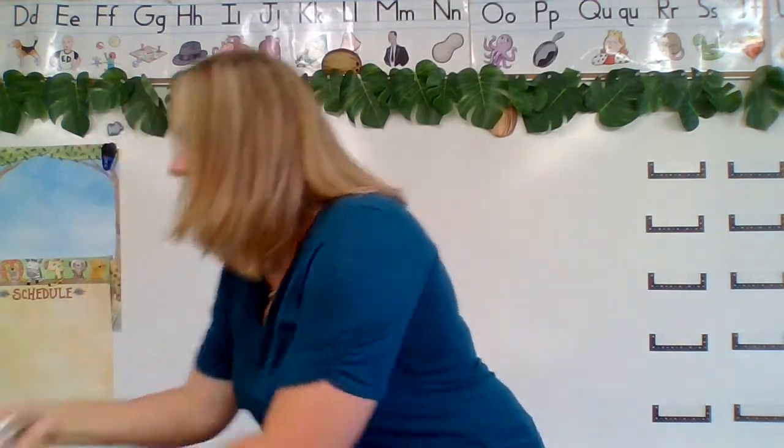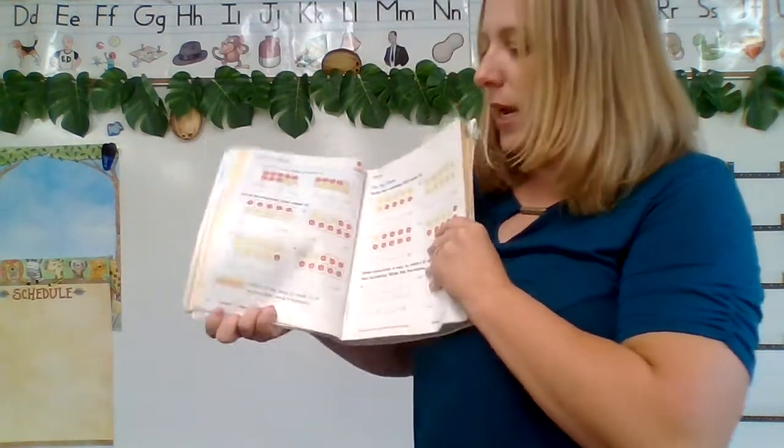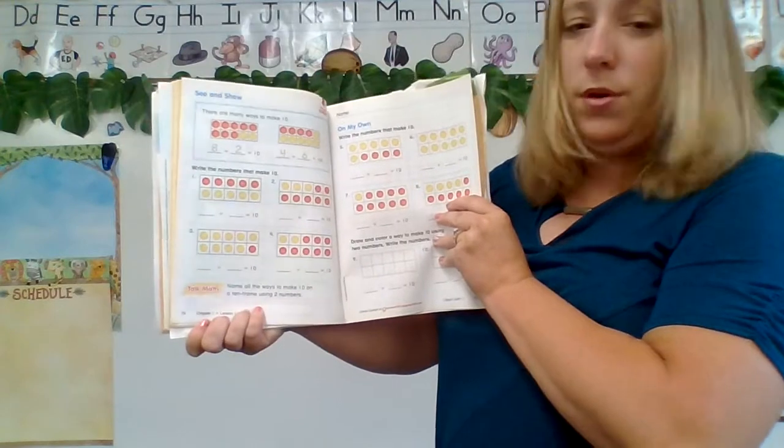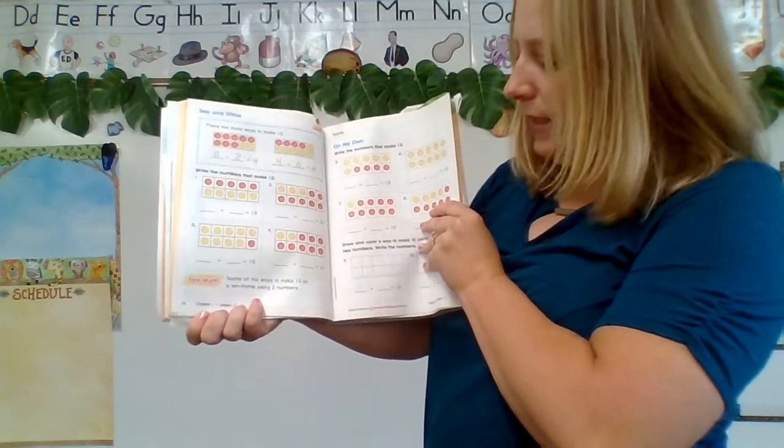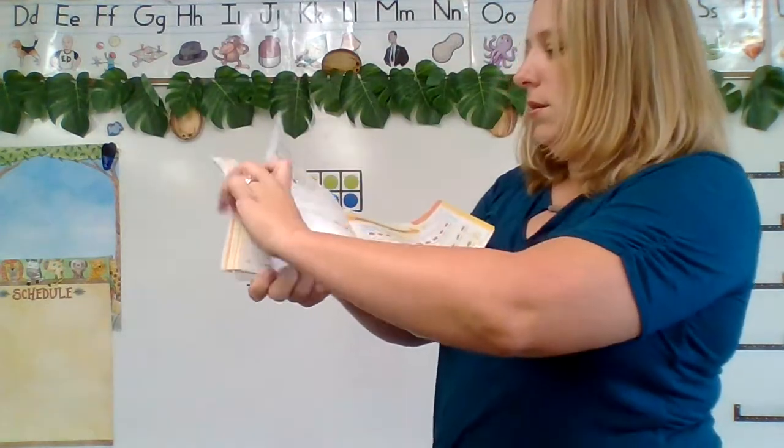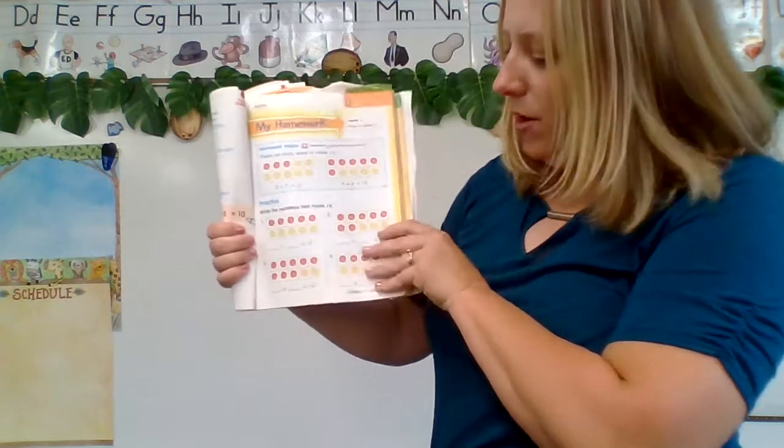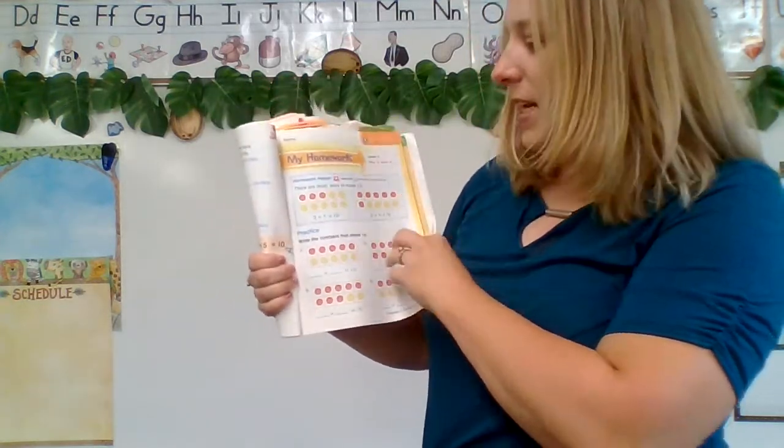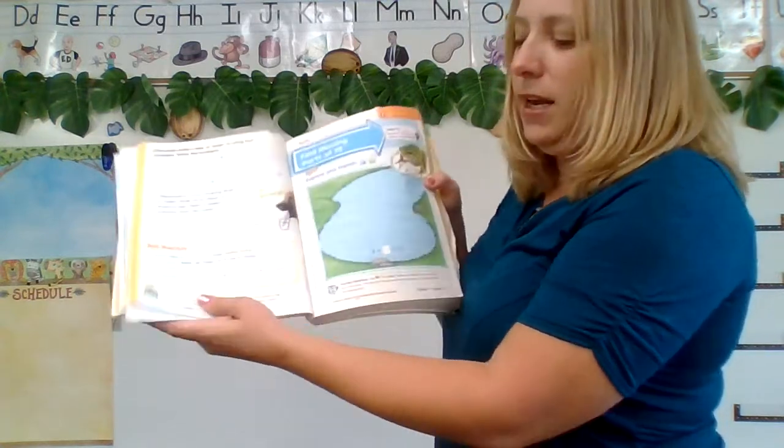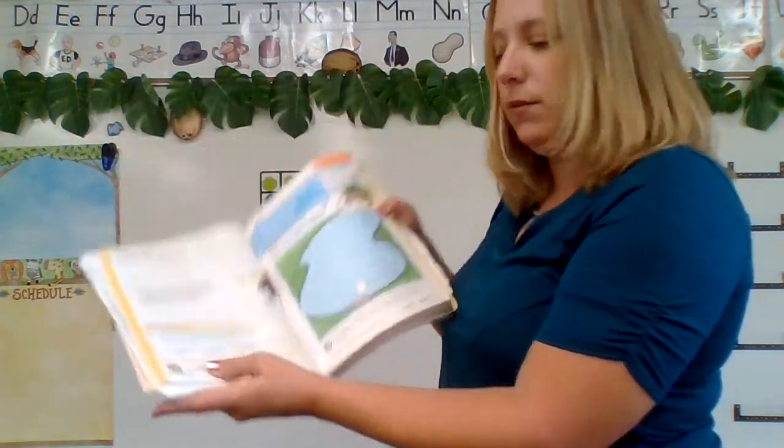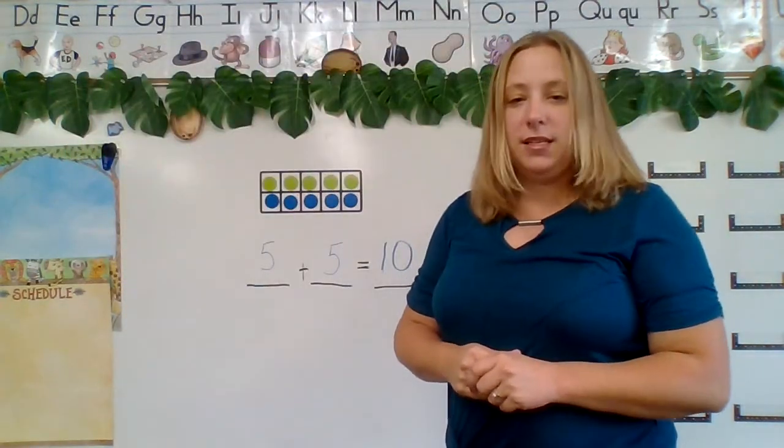So for homework, I would like you to do these two pages. This is page 76 and 77. You can go ahead and skip 78. But then I want you to do 79 and 80, which is this page right here. So you're going to do that on your own and find some different ways to make 10.